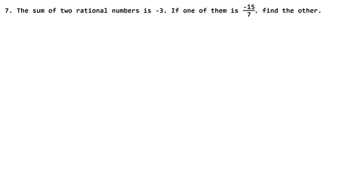In this question, the sum of two rational numbers is minus three. One rational number is minus fifteen upon seven.